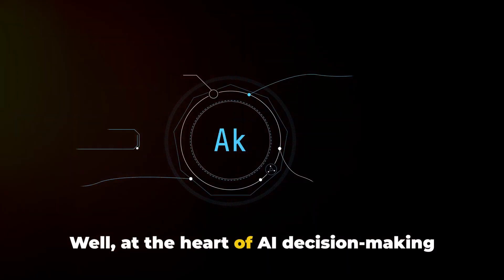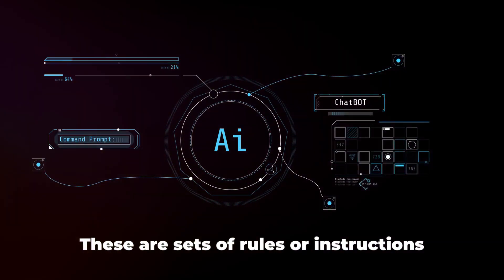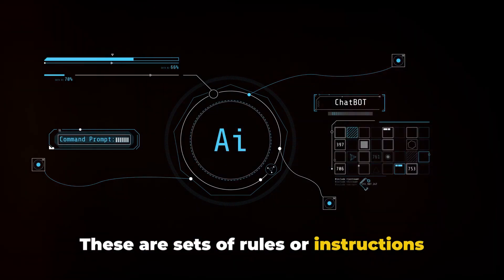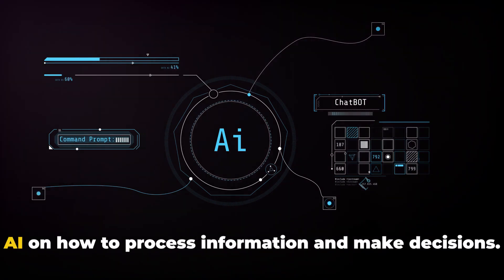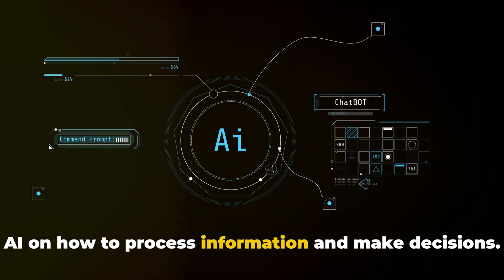Well, at the heart of AI decision-making are algorithms. These are sets of rules or instructions that guide the AI's actions. They're like the recipe that guides the AI on how to process information and make decisions.